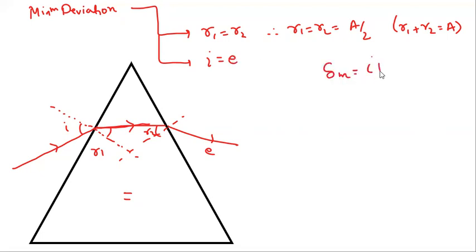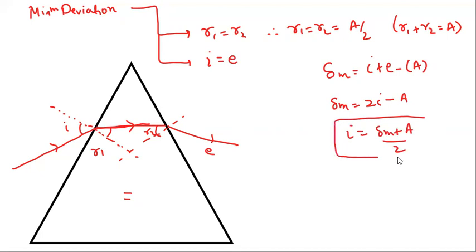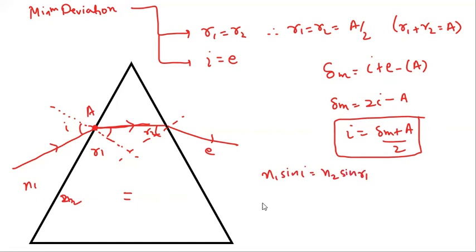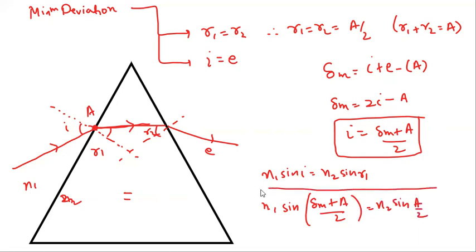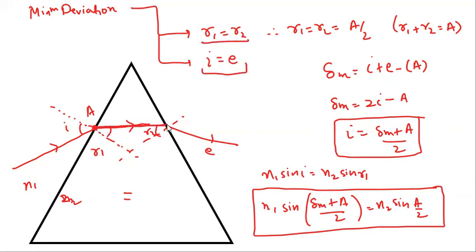The minimum deviation will be δm = i + e − A. But since i = e, we can write δm = 2i − A, so i = (δm + A) / 2. This is your angle of incidence for minimum deviation. Applying Snell's law at point 1: n1 sin i = n2 sin r1, which gives n1 sin((δm + A)/2) = n2 sin(A/2). This is the equation for refraction through a prism at minimum deviation. Remember: r1 = r2, i = e, and the refracted ray is parallel to the base.